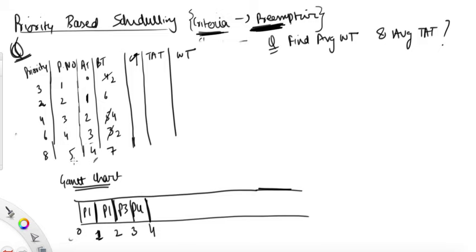At four units of time, yes — the boss is coming: P5. P5 has the highest priority, so execute it for its whole burst time because no other higher priority process will be coming to preempt it. Execute it for 7 units of time — four plus seven is eleven. P5 is done.